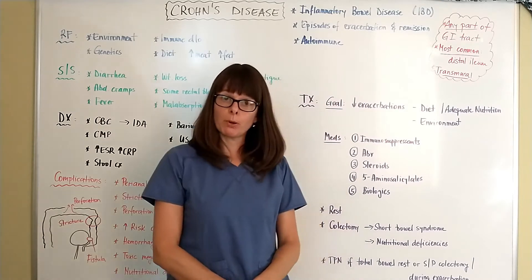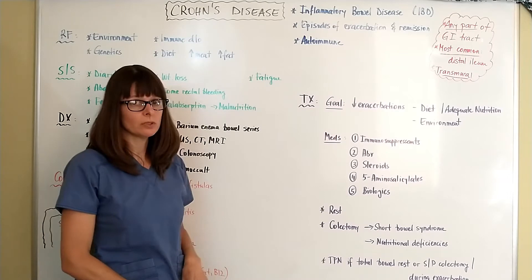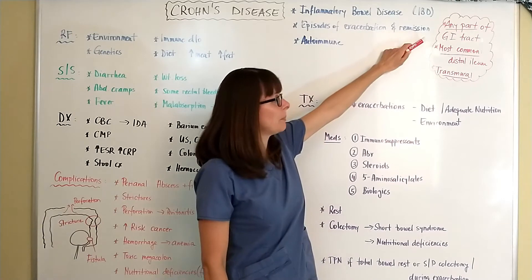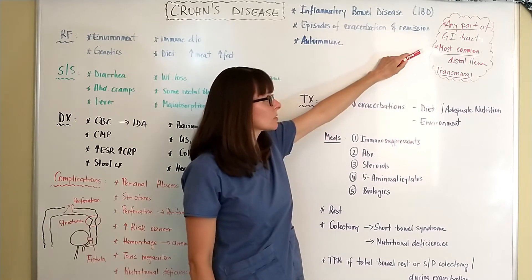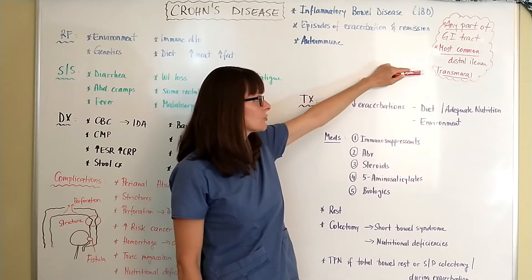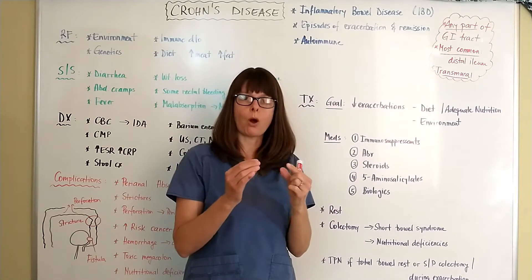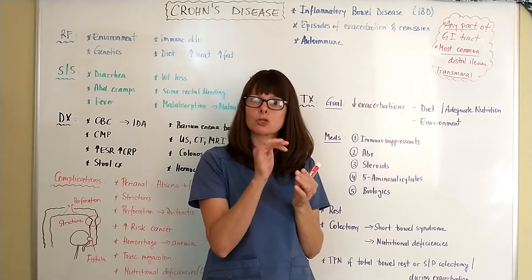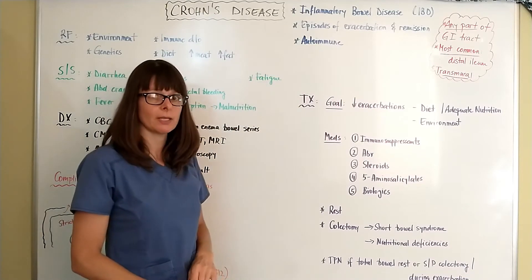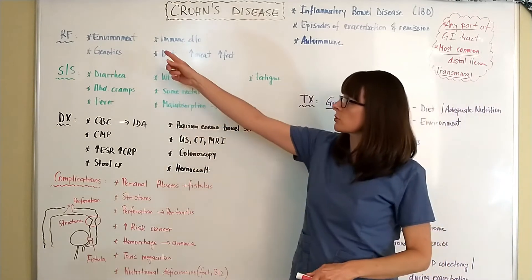While both inflammatory bowel disorders are autoimmune disorders, Crohn's disease involves any part of the GI tract, but most commonly is located in the distal ileum. It usually involves inflammation that is transmural, meaning it goes through the entire wall of the GI tract — not just superficial. There are usually episodes of exacerbation and remission in patients.